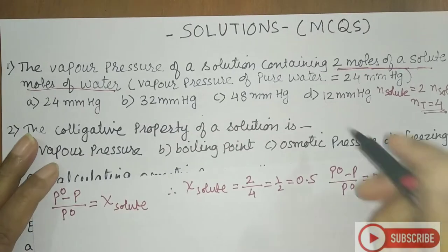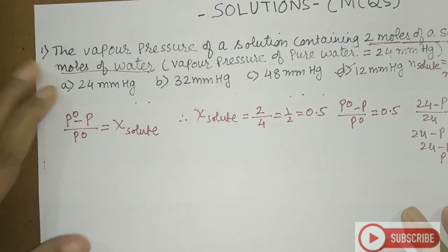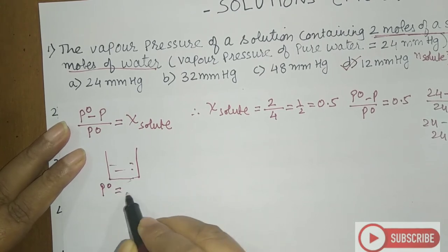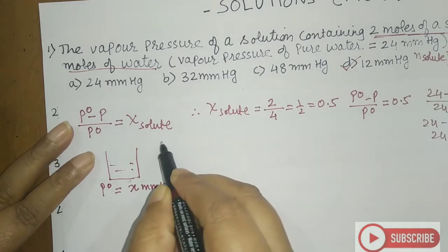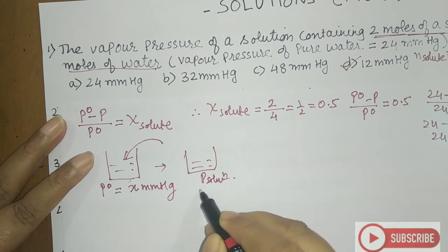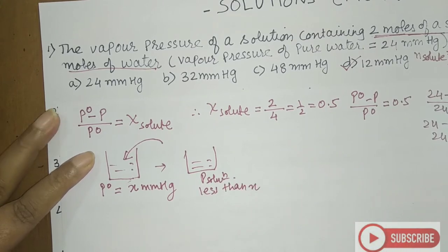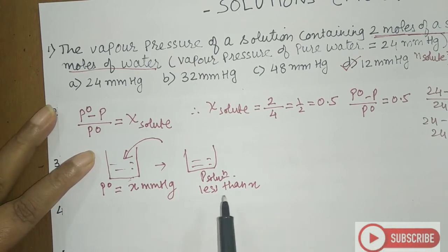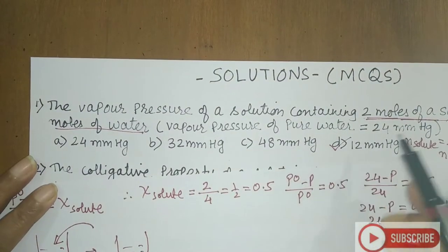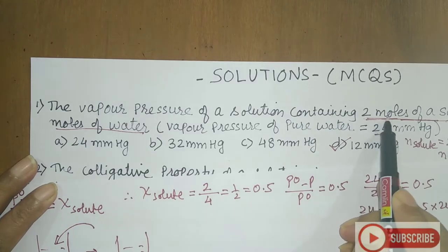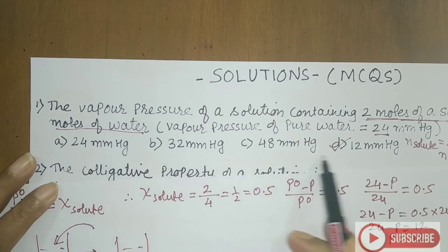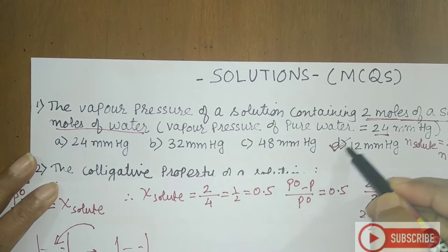Your answer is 12 mmHg. As a shortcut: if you know the concept of vapor pressure, adding a solute always lowers the vapor pressure. So the solution's vapor pressure must be less than 24. Checking the options, the only value less than 24 is 12. This confirms the answer.